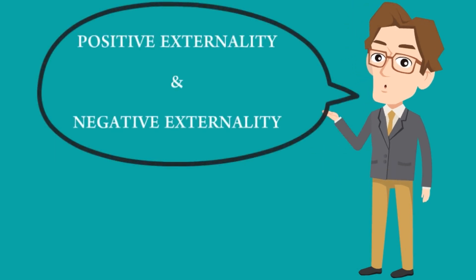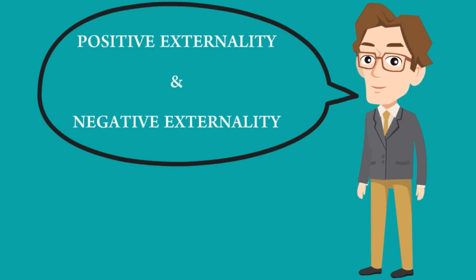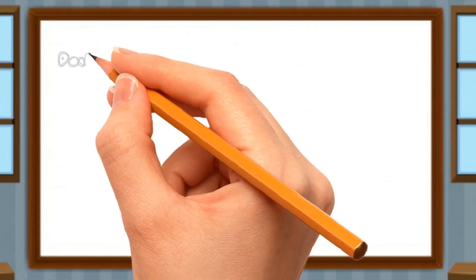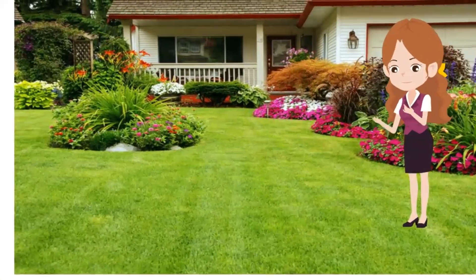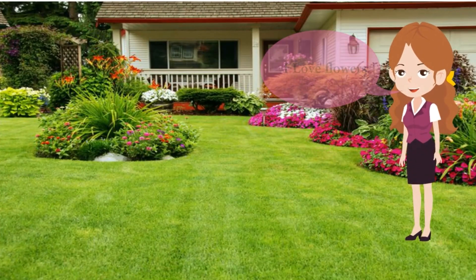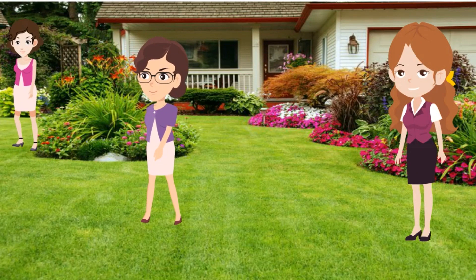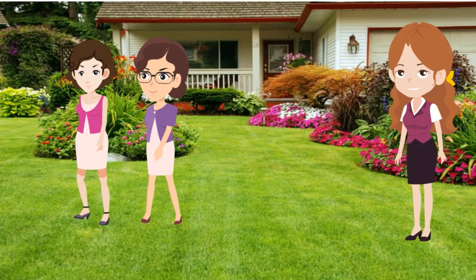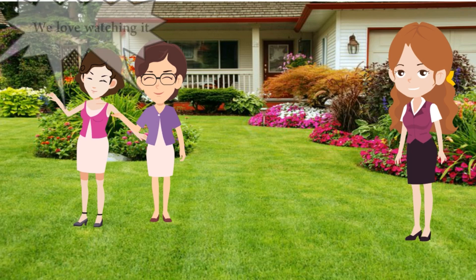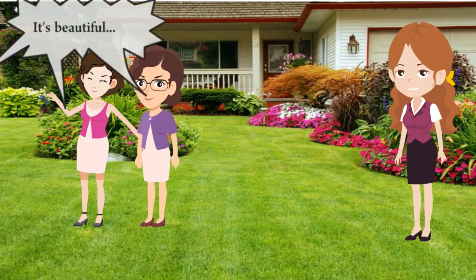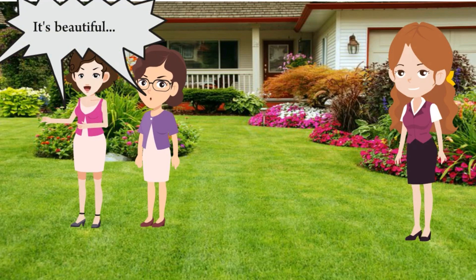There are two types of externality: positive and negative externality. Positive externality arises when an action by an individual or a group confers benefits to others. Miss Lucy is a person who loves gardening and maintains a beautiful garden. Her actions generate a positive externality, since her actions not only benefit herself — giving her satisfaction from the beauty of the garden — but also give satisfaction to her neighbour who enjoys the beauty of her garden without any contribution. Hence, her action benefits her neighbour and the society as a whole.